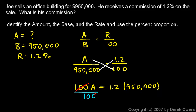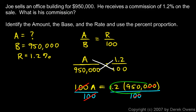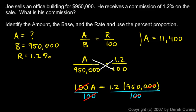To solve for a, I divide both sides by a hundred. On the right side I can cancel two zeros from the hundred with two zeros from nine hundred and fifty thousand, leaving 1.2 times ninety-five hundred. That comes out to eleven thousand four hundred. So a equals eleven thousand four hundred — and that's the answer using the percent proportion.